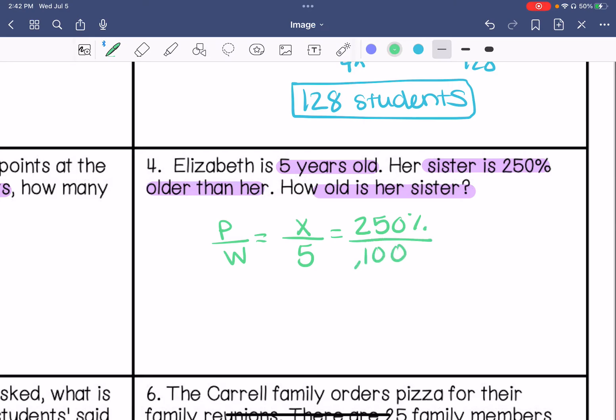So we would divide by 20 to get 5, so 250 divided by 20. So we know that her sister is 12 and a half years old.